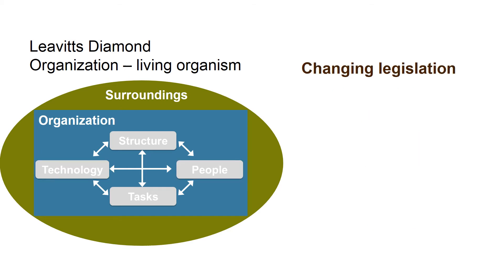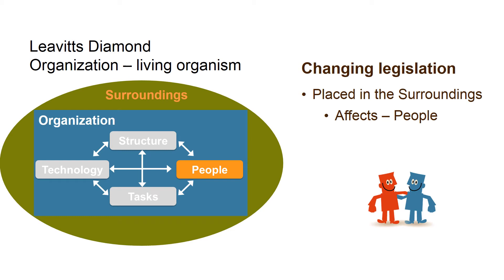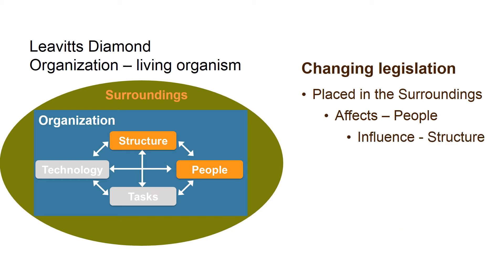A change in legislation is clearly placed in the surrounding world. New speed limits, for example, do not affect the organization. But if it is new rules about a longer maternity leave, then it affects the component People. It will also influence the component Structure, as the organization must ensure to place employees so that all tasks are completed.